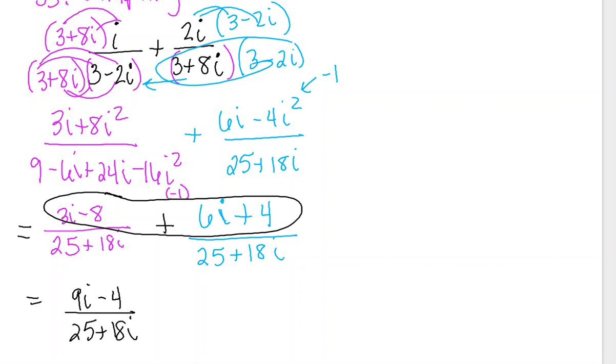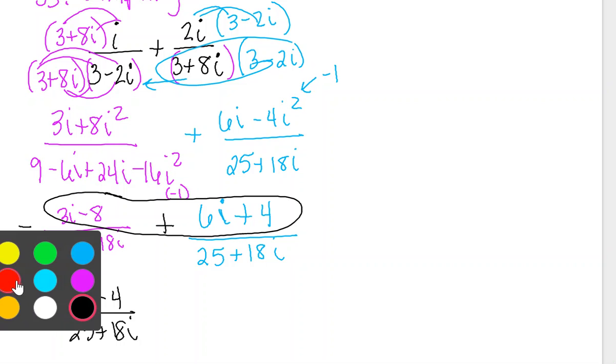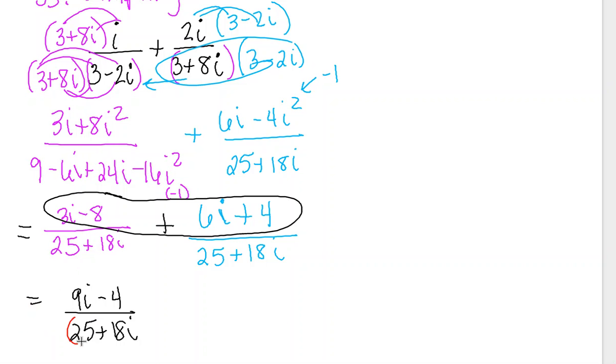Now I am not finished. In the problem we did in the notes, we were finished. I am not finished. Watch why. I'm not allowed to leave that i in the denominator, so I have to multiply this by the conjugate, which is why this problem is a little crazy. So I want to multiply by 25 minus 18i in the numerator and denominator.